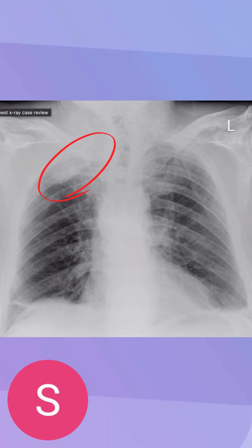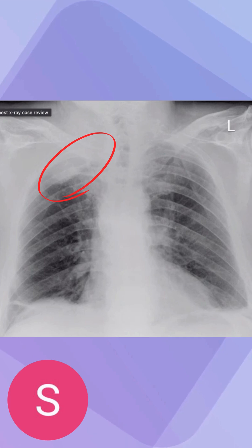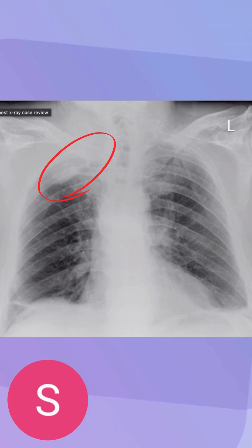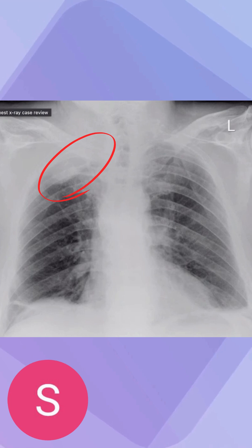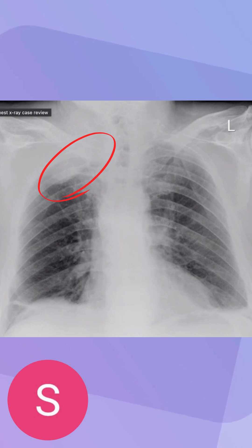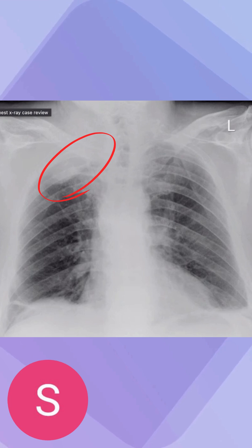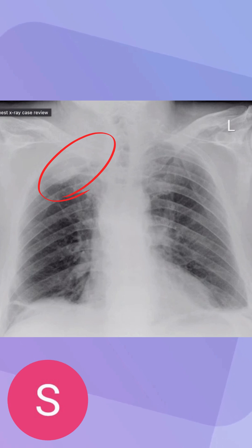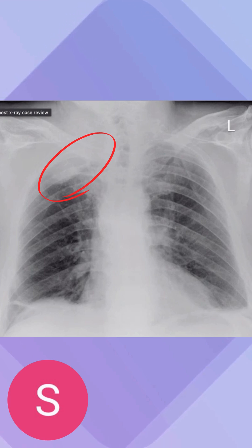However, another issue we can pretty clearly see is in the right lung. Both lungs are pretty symmetrical — we can clearly see the boundaries of each lung. But in the right lung, we can see a large white area in what should be lung tissue, compared to the symmetrical left lung. That's a sign where there could be a tumor or a large mass growing there, and that would need to be addressed.